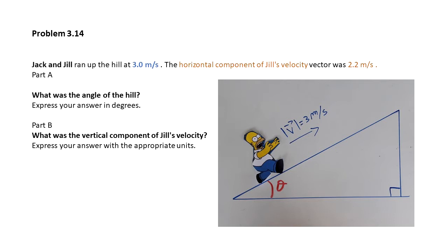The horizontal component of Jill's velocity is 2.2 meters per second. So express the angle of the hill in degrees for part A, and for part B, what is the vertical component of Jill's velocity.